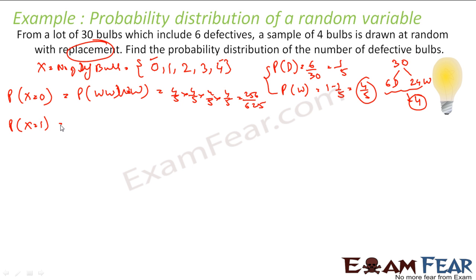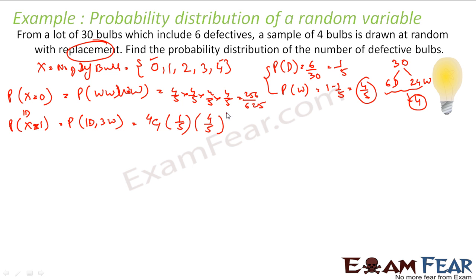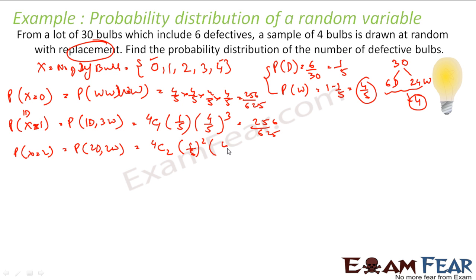Second, probability of X equal to 1 — one bulb is defective. Out of 4 bulbs, 1 is defective and 3 are working. So this is 4C1 times the probability of 1 defective, which is 1 by 5, times the probability of 3 non-defective, which is 4 by 5 to the power 3, giving 256 by 625. Probability of X equal to 2 is 4C2 times 1 by 5 squared times 4 by 5 squared, which comes out to be 96 by 625.